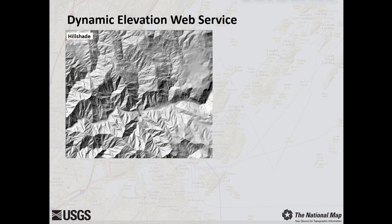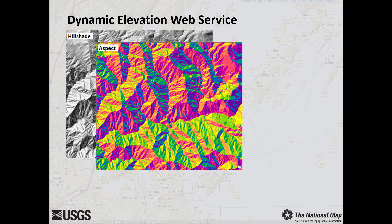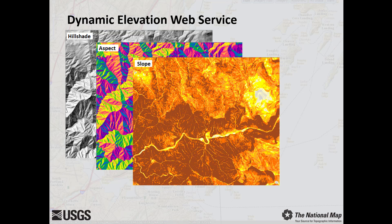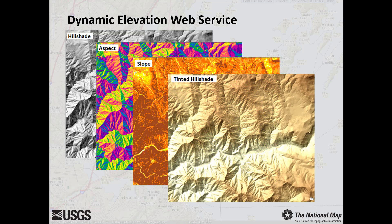The Dynamic Elevation Map Service creates multi-resolution visualizations on the fly from digital elevation models, allowing users to explore a variety of representations including hillshade, aspect, slope, and tinted hillshade maps, as well as automated contours and more.